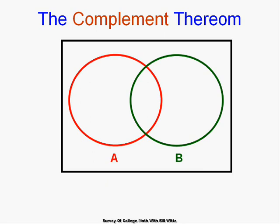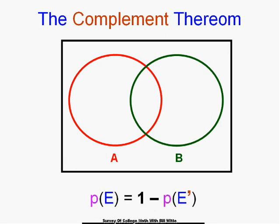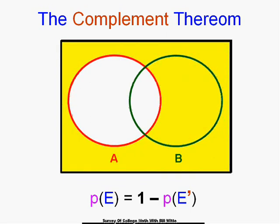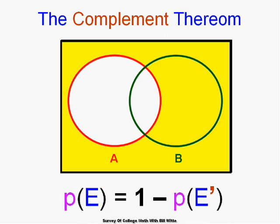The complement theorem: the probability of an event happening equals 1 minus the probability of the event not happening, because the whole sample space adds up to 1. This will come into play especially when dealing with mutually exclusive events.